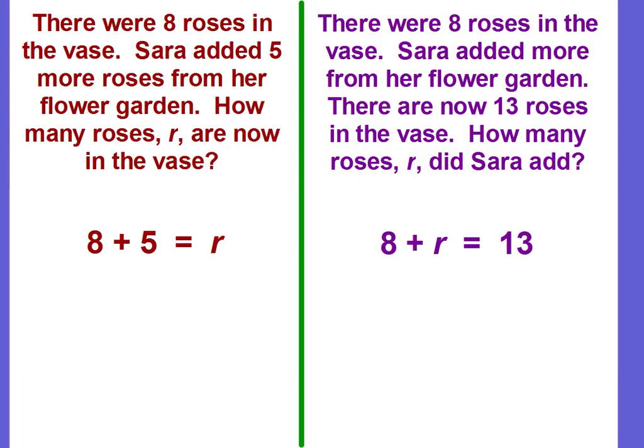Let's look at these two situations. The one on the left says there were eight roses in the vase. Sarah added more roses from her flower garden. How many roses are now in the vase? So it's asking us to find how many roses, the R. They're wanting us to find the total amount. The total is going to equal R.